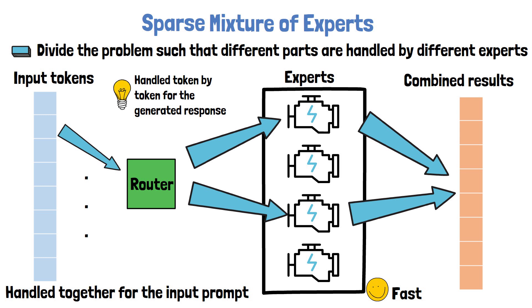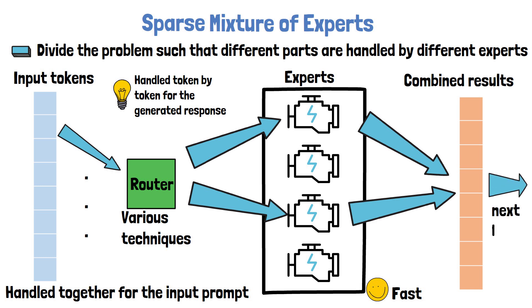For the Router, there are various techniques to implement the routing logic, which we won't dive into here. In this example we also present a single layer, while there are usually more than one, so the outputs of this layer are moved to the next layer in the model.